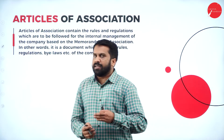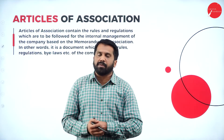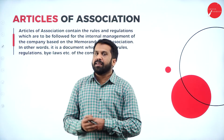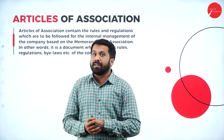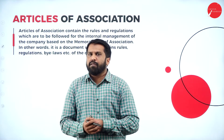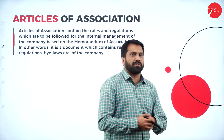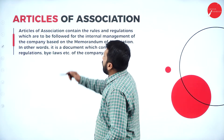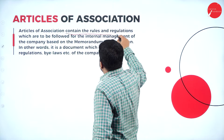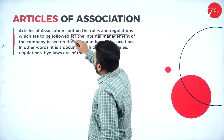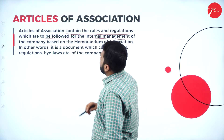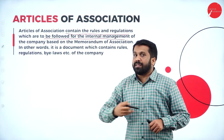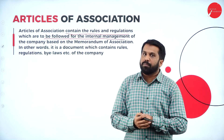Articles of association is the second part, and it is almost similar to the memorandum. However, the memorandum cannot be altered immediately, whereas the articles can be altered by following a few procedures. Articles of association contain the rules and regulations to be followed for the internal management of the company. Memorandum governs the company broadly; articles govern the day-to-day activities.